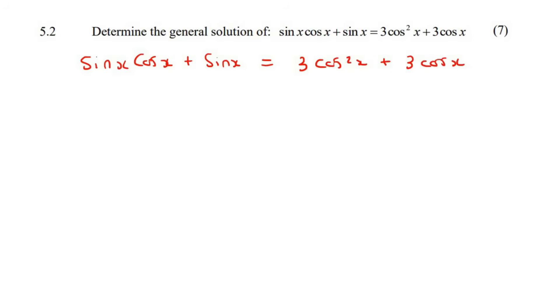If we take out a common factor on this side, that would be sin x - that would be your common factor. What would you be left with? Cos x plus one. Then on this side you can take out a common factor of three cos x. What would you be left with? Cos x plus one.